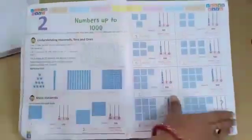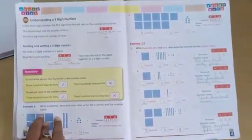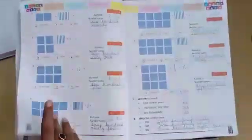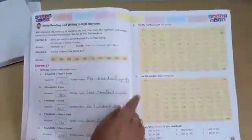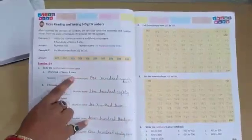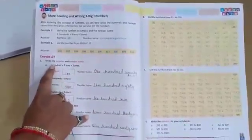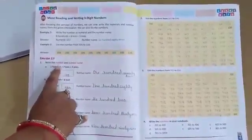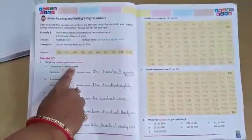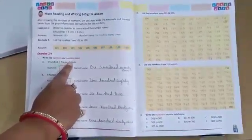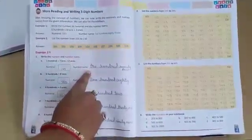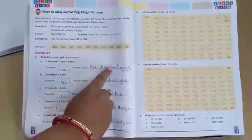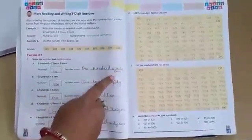Now, some more examples are over here. Just see how you are going to write the number name of 100 plus 7 tens plus 2 ones. It can be written as 172.